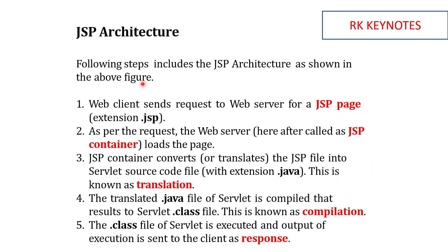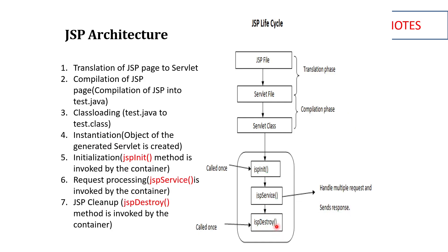I have specified the steps based on the architecture diagram. First, you send the request; it reaches the web server and the JSP file is converted into a Java file — that is called the translation phase. Then the Java file is compiled and a class file is created — that is the compilation phase. The class file is executed and the response is sent back to the client. Also, similar to the servlet lifecycle, we have jspInit, jspService, and jspDestroy methods.